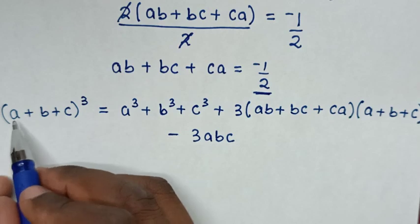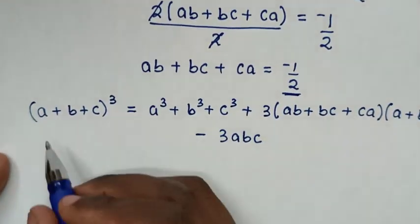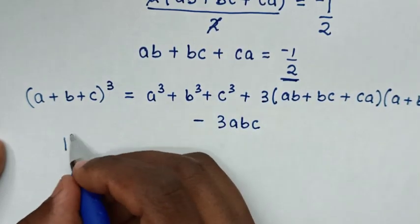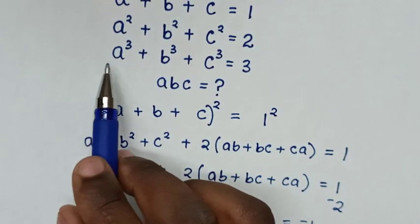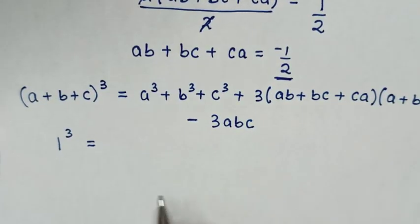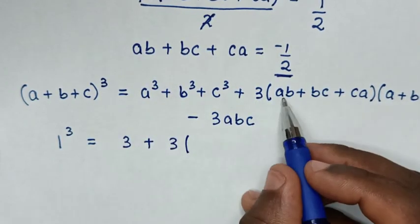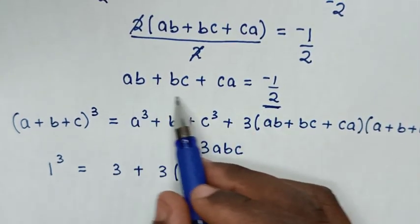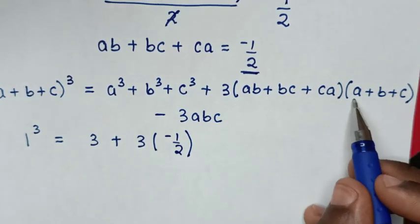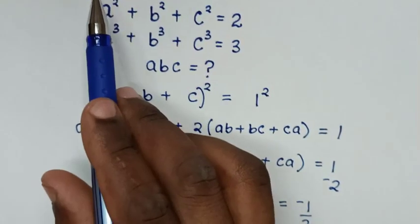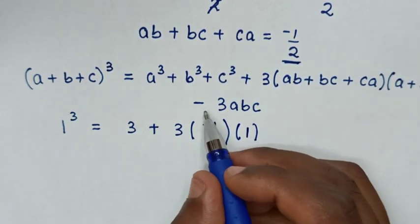From the first equation, A plus B plus C equals 1, so we substitute: 1³ equals A³ plus B³ plus C³, which from the third equation equals 3. Then plus 3 times (AB plus BC plus CA), which is negative 1/2, times (A plus B plus C), which is 1, then minus 3ABC.